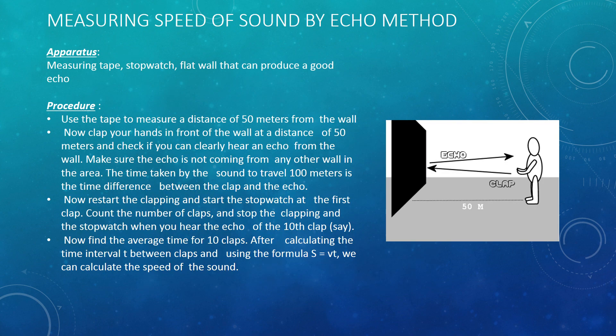The next topic is measuring the speed of sound by the echo method. We will perform this experiment to measure the speed of sound. The apparatus needed is: a measuring tape, a stopwatch, and a flat wall that can produce a good echo. The procedure is simple. If we clap with a wall placed at a distance of 50 meters, the total distance covered by the echo would be 100 meters — 50 meters going to the wall and 50 meters coming back.